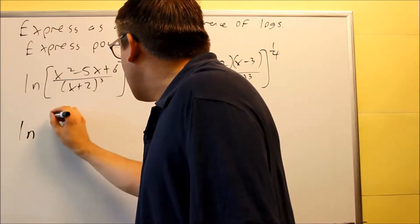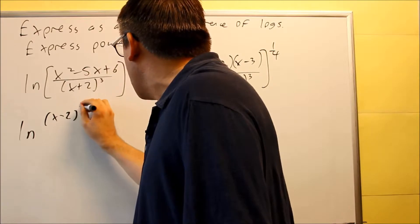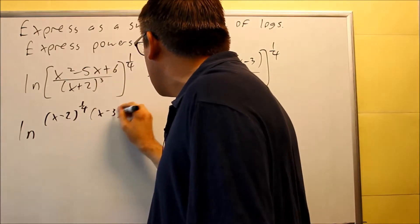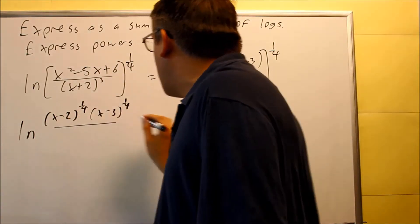So that's going to look like this. I have ln and everything inside, x minus two to the one-fourth. I have x minus three to the one-fourth. Now, on the bottom,